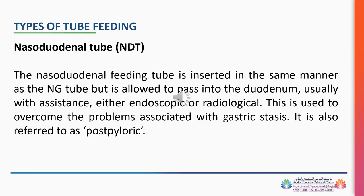Nasoduodenal tube: The nasoduodenal feeding tube is inserted in the same manner as the NG tube but is allowed to pass into the duodenum, usually with assistance either endoscopic or radiological. This is used to overcome the problems associated with gastric stasis. It is also referred to as post-pyloric.